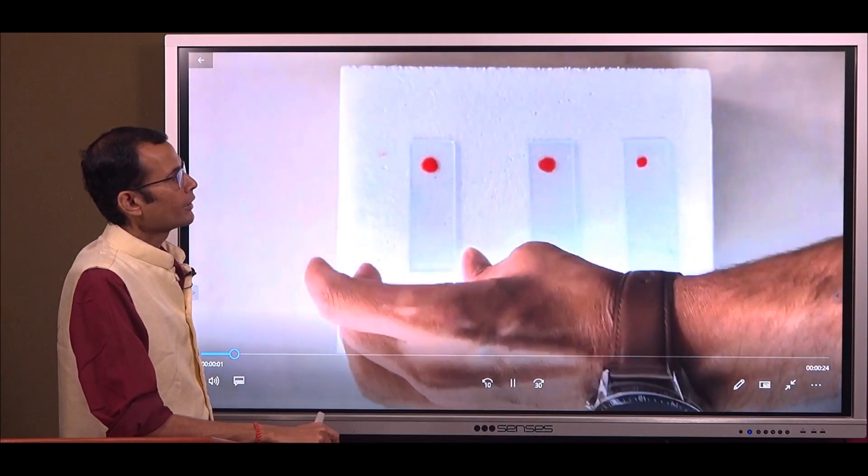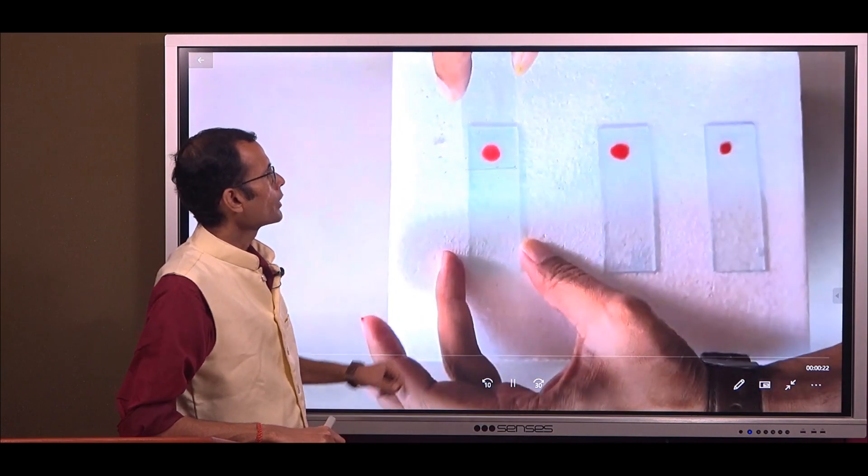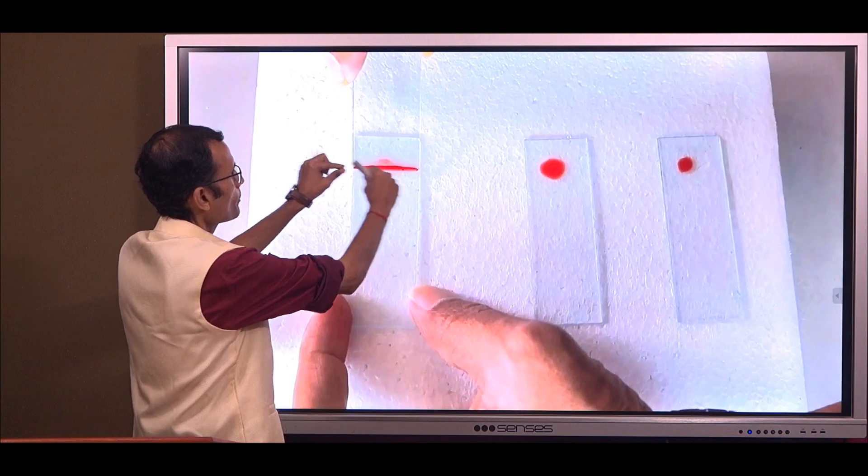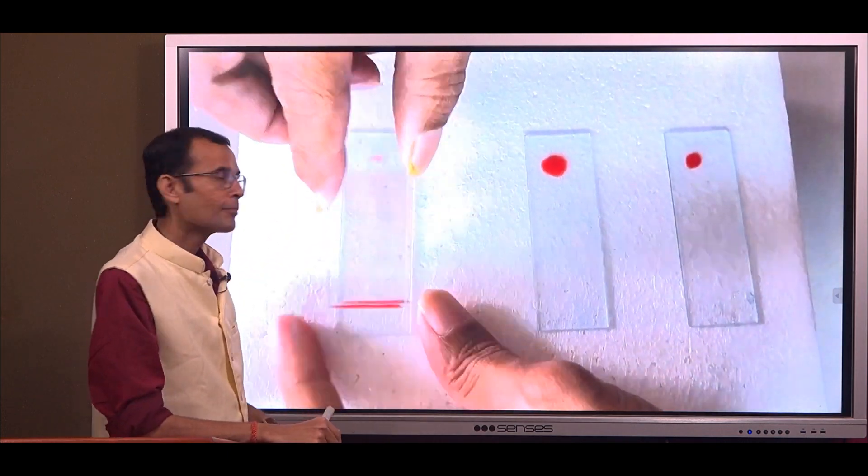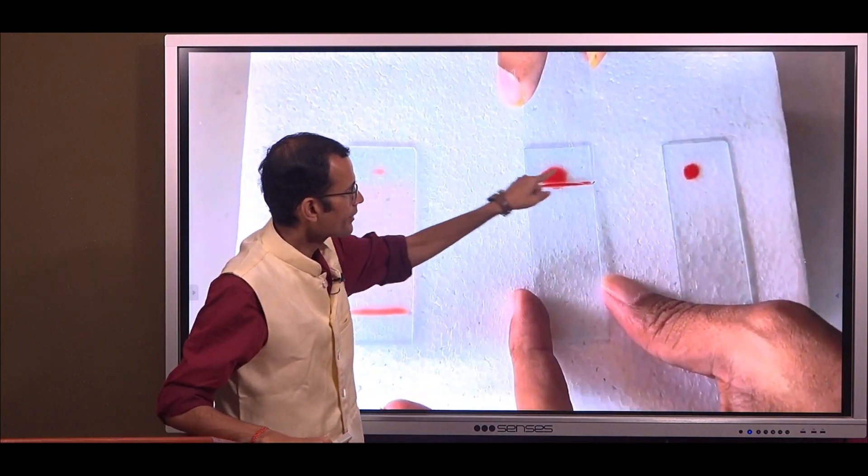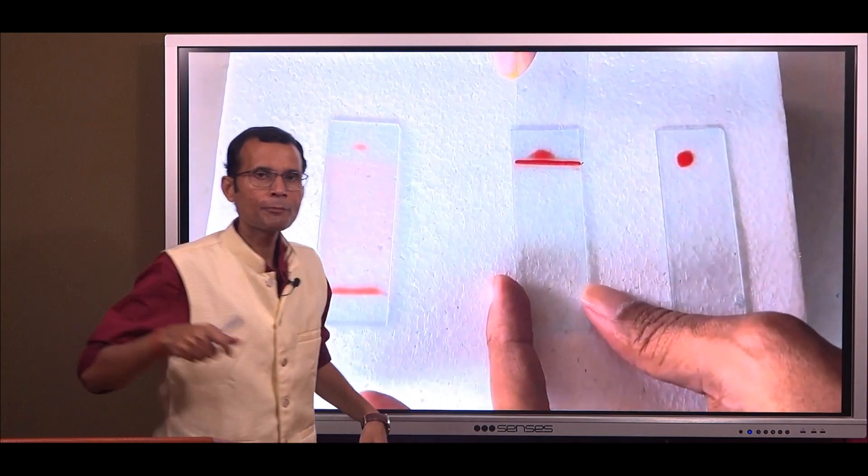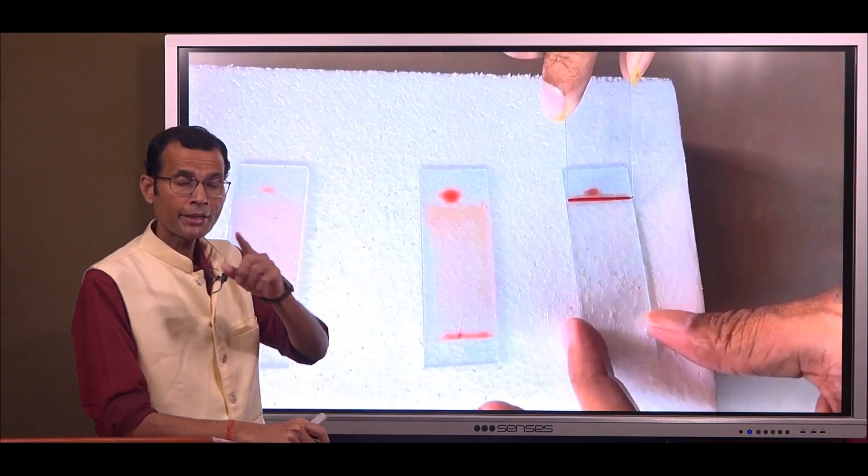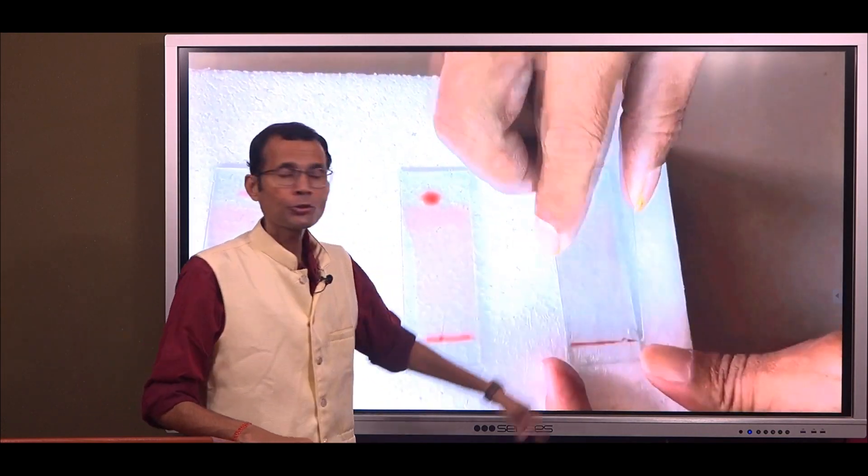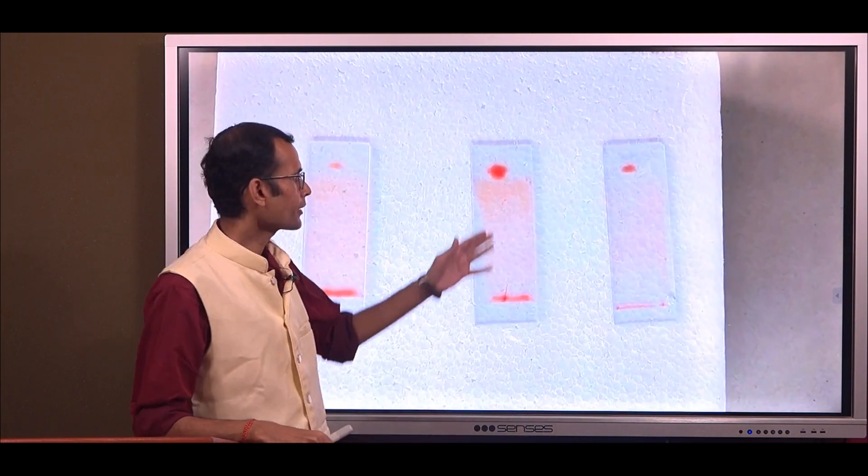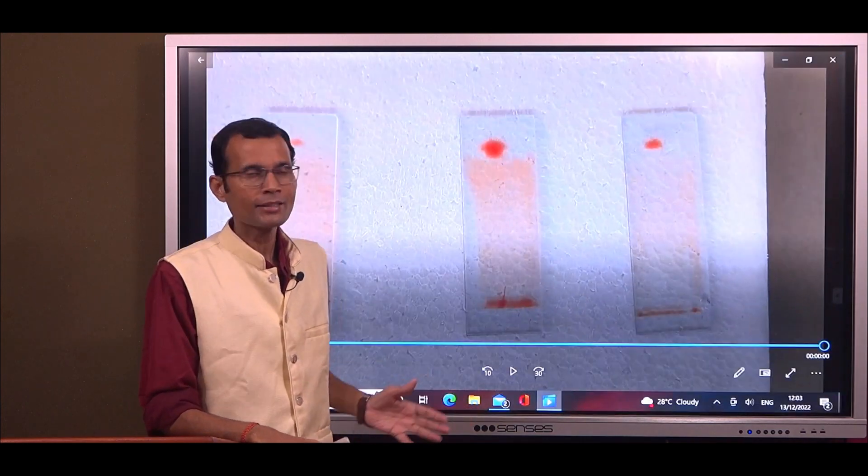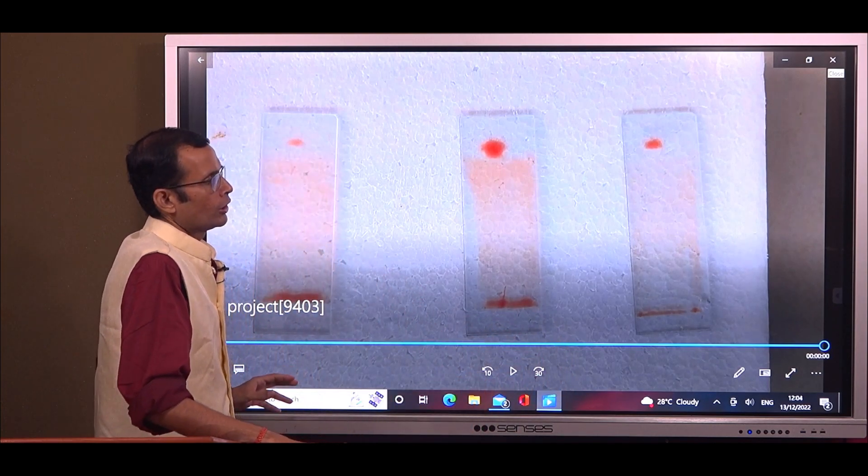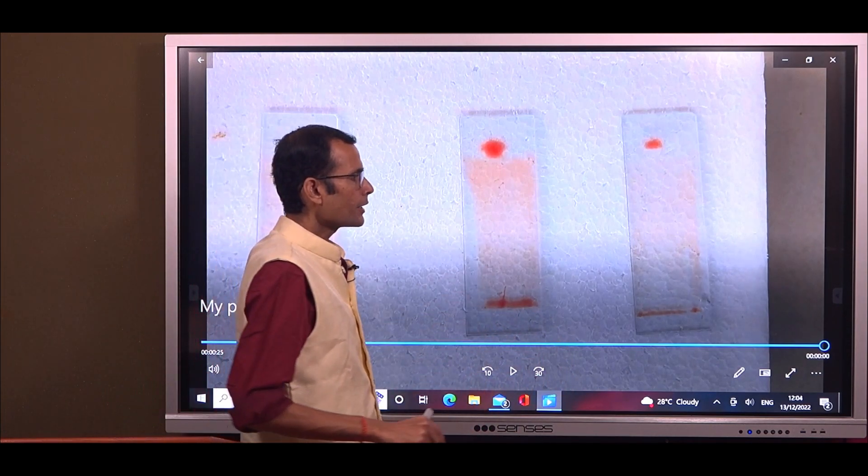Then take a spreader slide, hold it just in front of the blood drop so that the drop spreads along the edge of that slide, and then once it spreads, move the spreader slide forward in one single smooth action. Mind you, the slide should be properly cleaned before you start making the smear because otherwise you're likely to see patches in between. So that's how a peripheral smear is made.